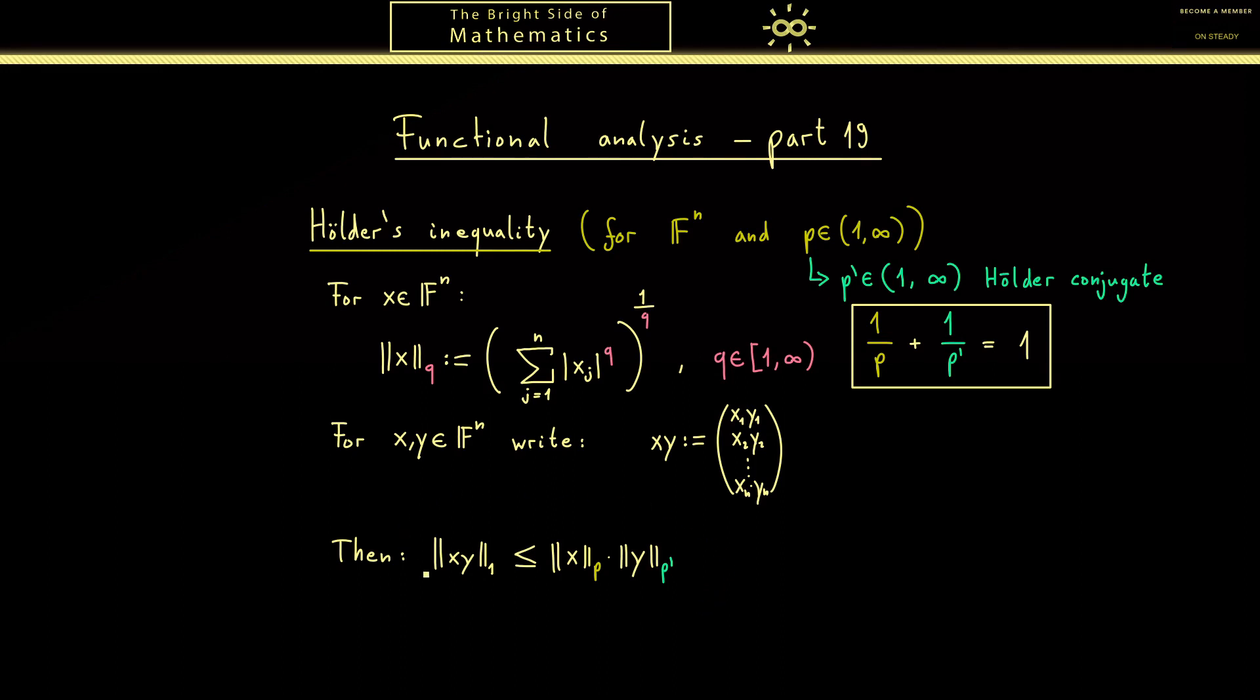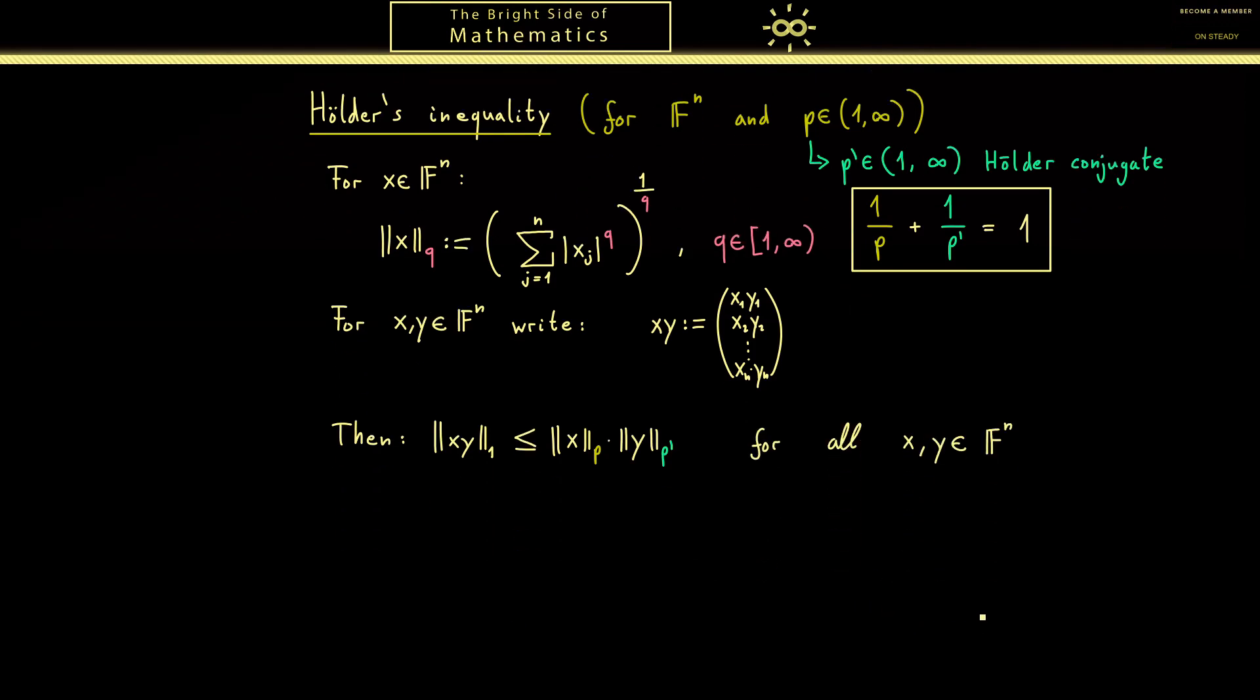Indeed, there we will have the whole inequality for functions defined on an abstract measure space. However, that's not what we do today. Today we prove it for vectors in F^n.